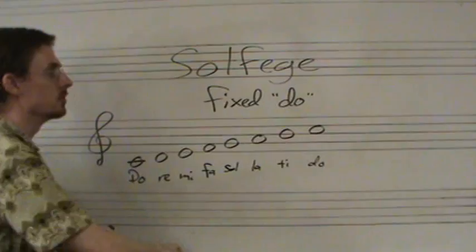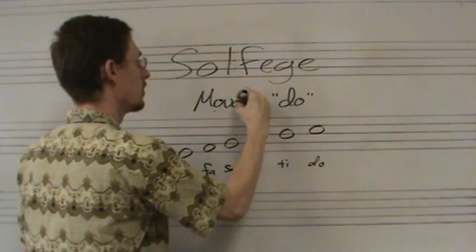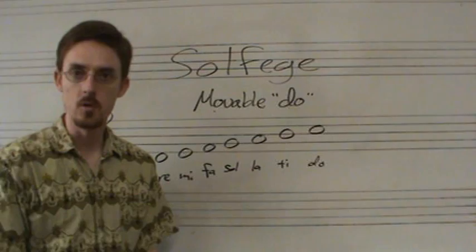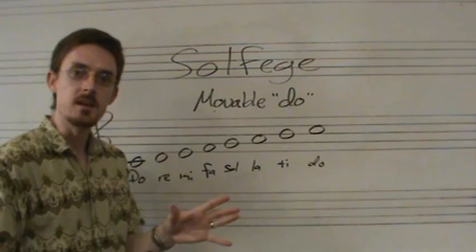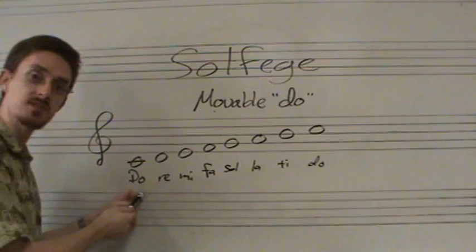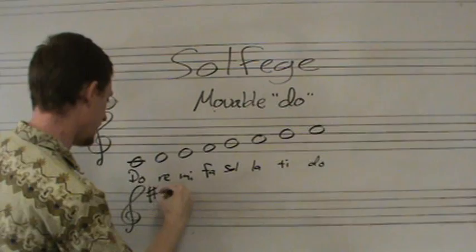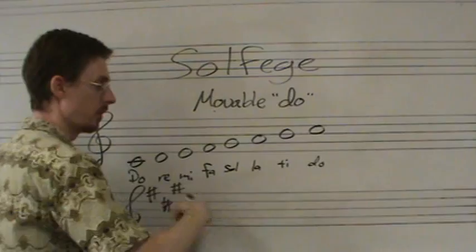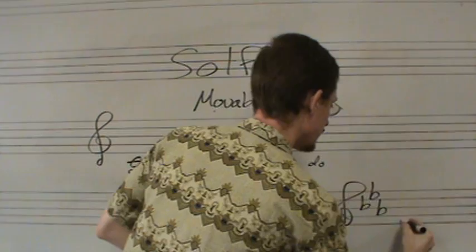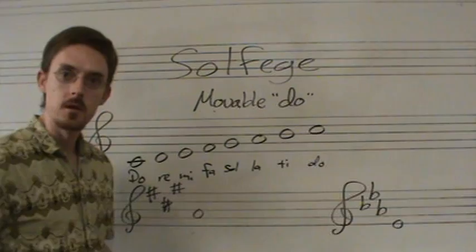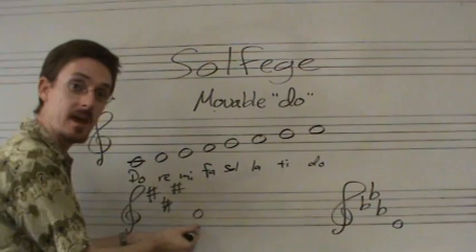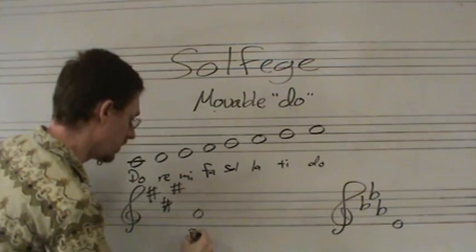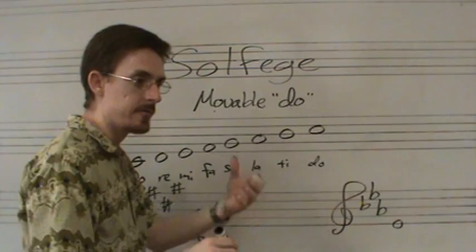What we use is the moveable doe system. Moveable doe determines that regardless of your key, the root note — so if you are in the key of C, the root note is C; if you are in the key of A, your root note is A; if you are in the key of E-flat, your root note is E-flat — and in the moveable system, the root note will become doe. So in this case, A, which is the root note of the key of A, is now doe; and E-flat, which is the root note of the key of E-flat, the first scale degree or the tonic, is doe.